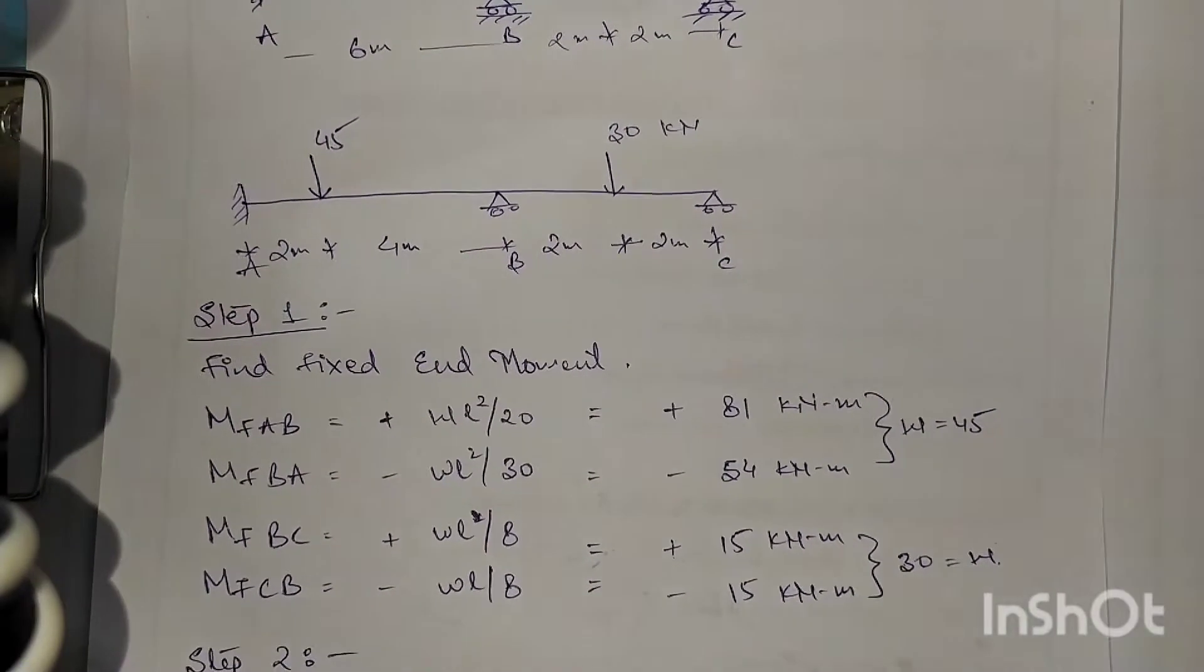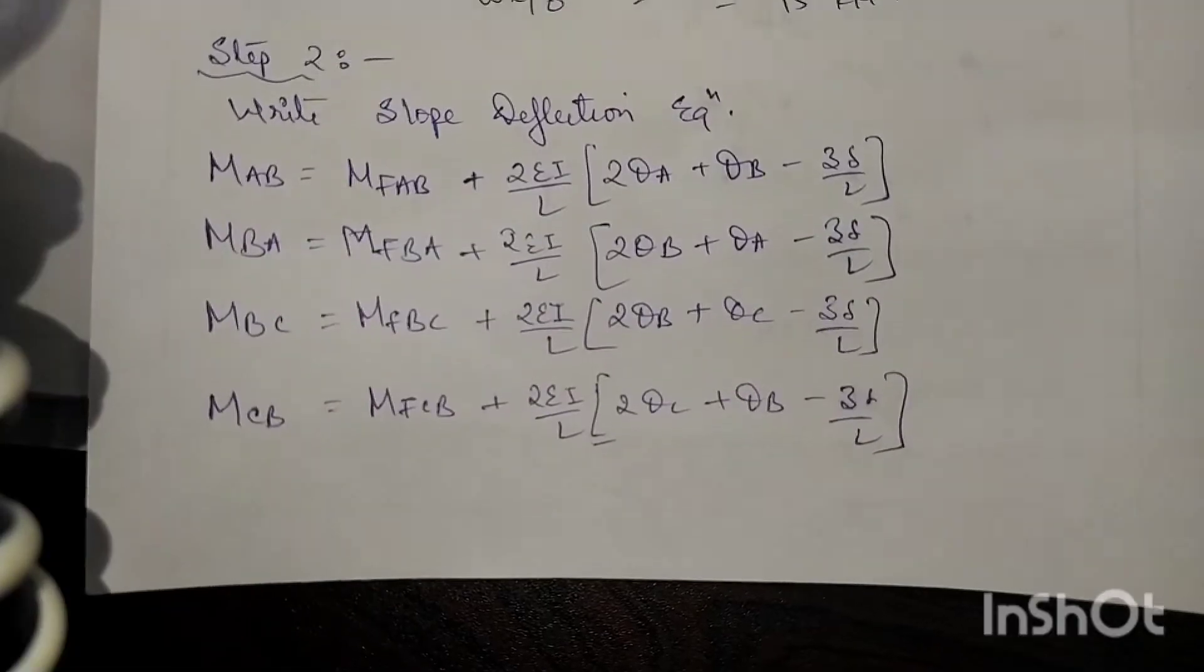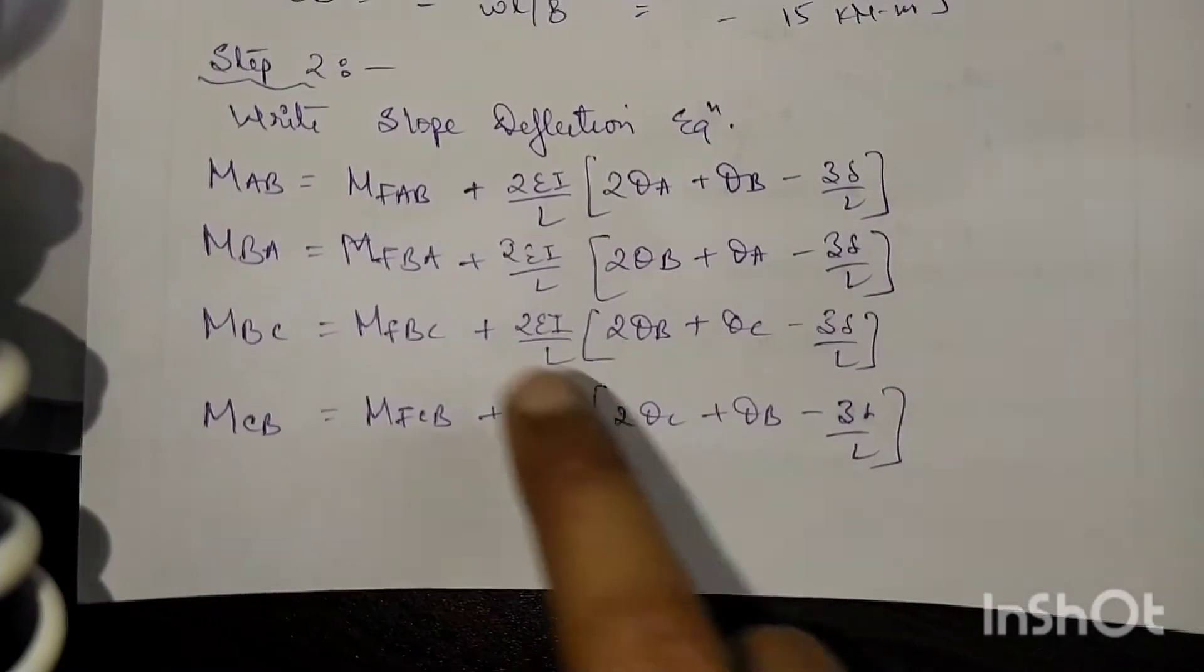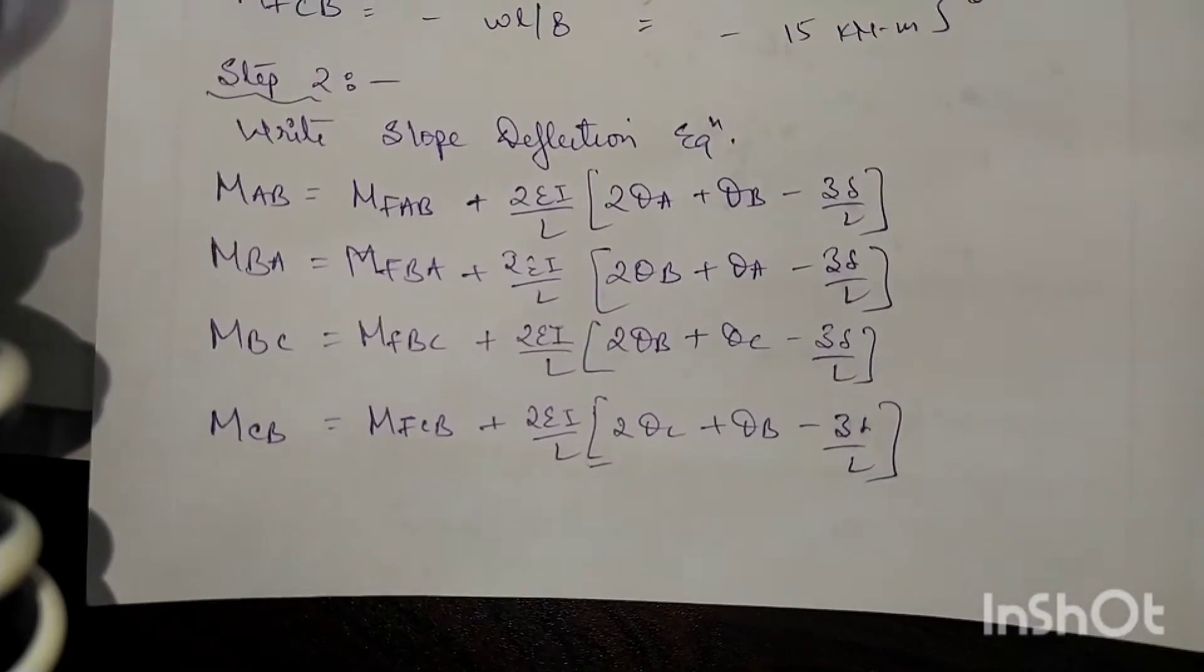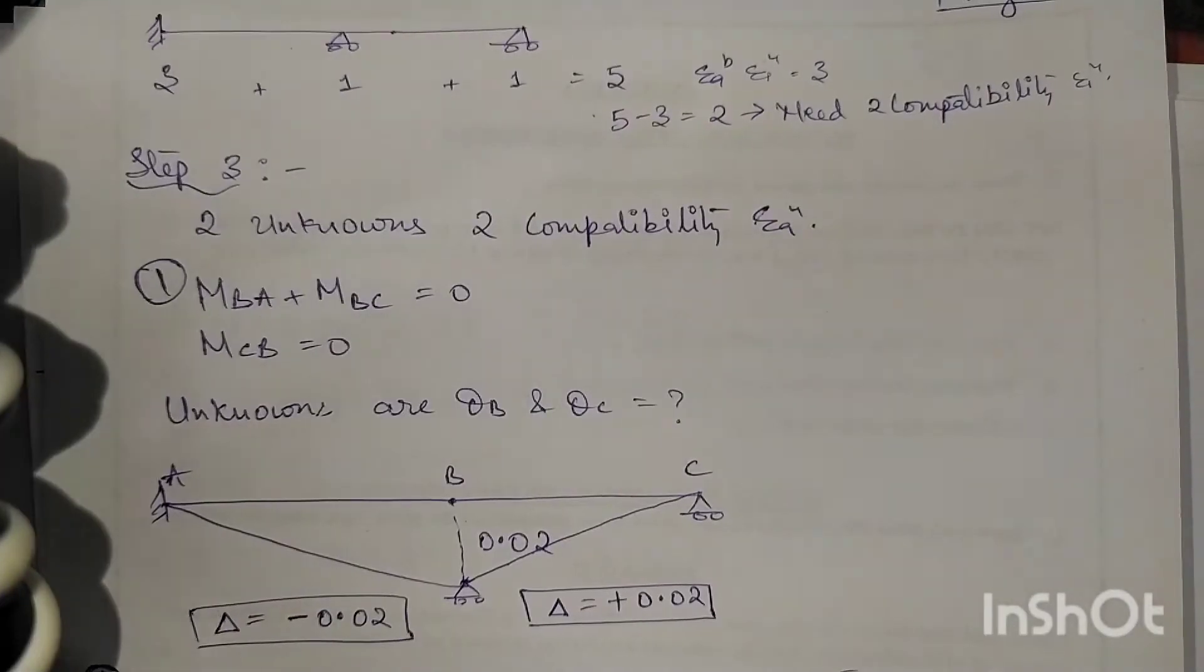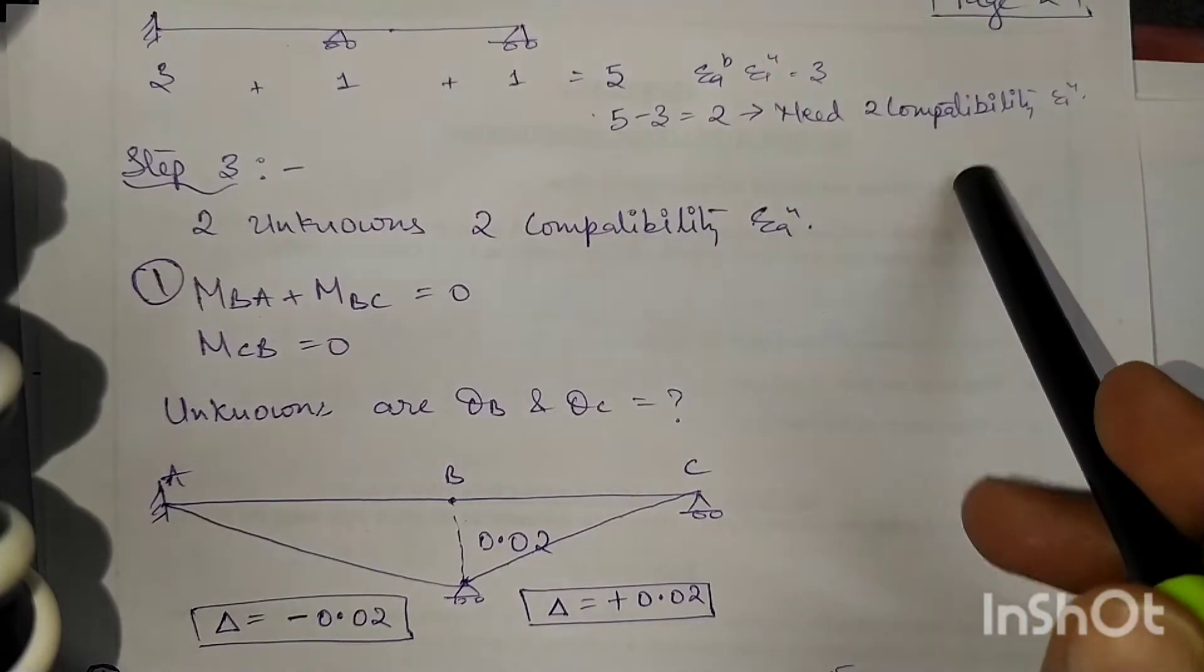Step number two: writing all the slope deflection equations. I have written all the slope deflection equations here. Next is compatibility equations - two unknowns, two compatibility equations, and the nature of the delta we are using.